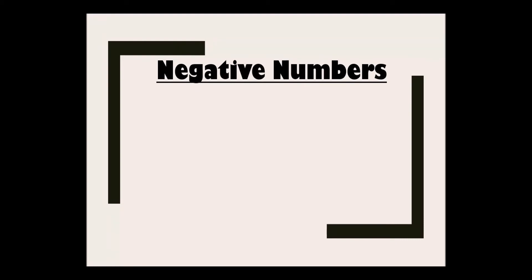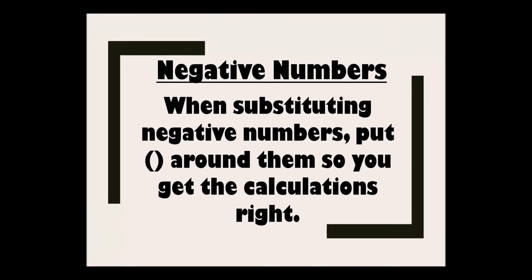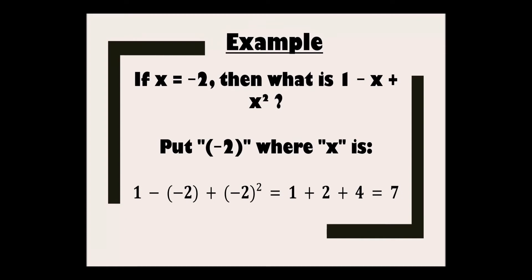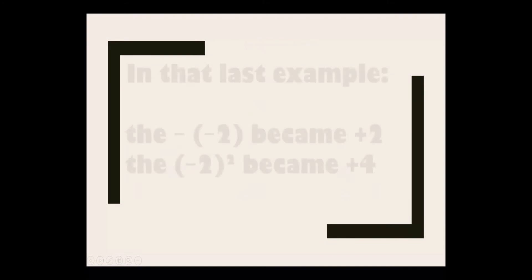Now, what about negative numbers when substituting? Put brackets around negative numbers so you get the calculations right. For example, if x equals minus 2, what is 1 minus x plus x²? We put minus 2 in brackets. So 1 minus (−2) plus (−2)². Now minus minus becomes plus, so 1 plus 2, and (−2)² becomes plus 4. So 1 plus 2 plus 4 equals 7.